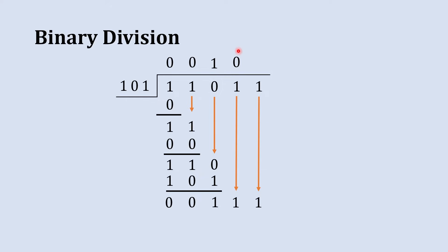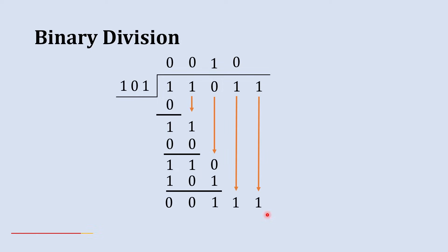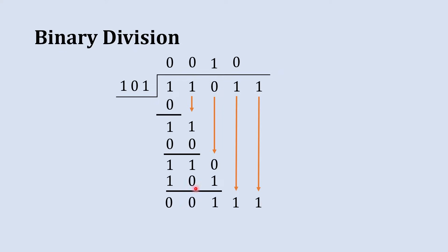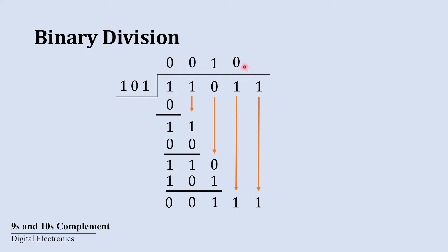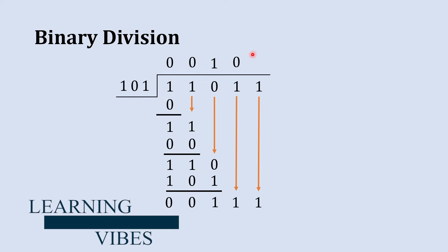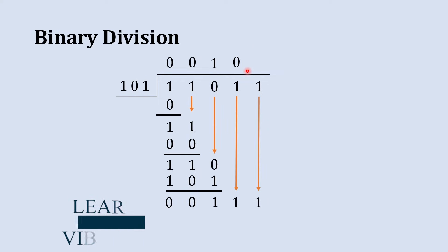When you bring an additional digit down, place a 0 in the quotient. Remember: whenever you bring additional digits down beyond the normal step, you must place that many zeros in the quotient. For example, if you bring three additional digits down, you place three zeros. Here we bring one additional digit down, so we place one zero in the quotient.